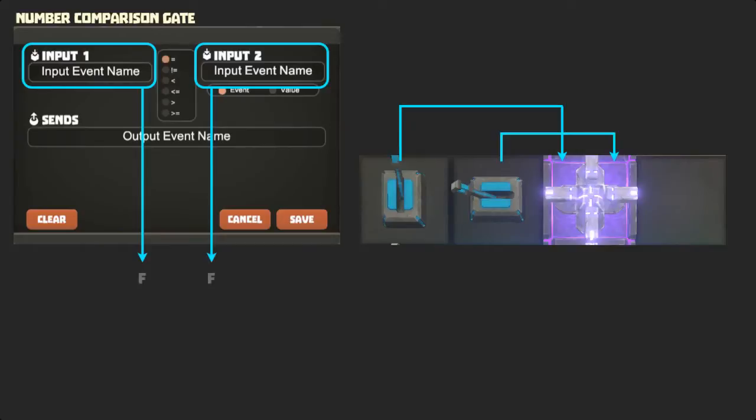Both switches outputting false, the switch to output 1 false and the switch to input 2 true, the switch to input 1 true and the switch to input 2 false, and finally, both switches outputting true.